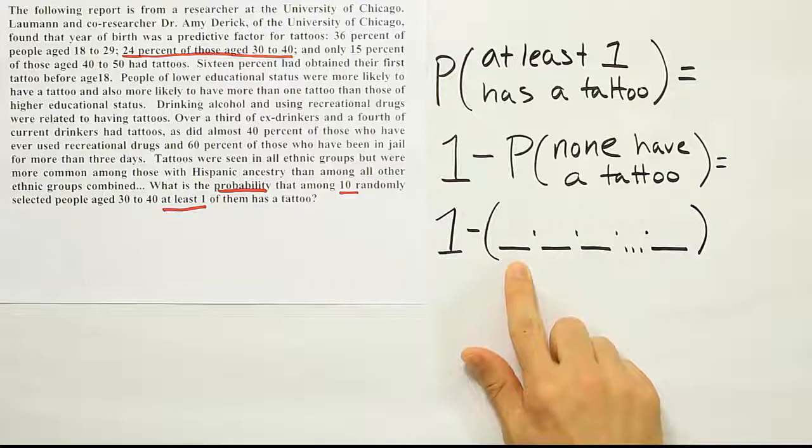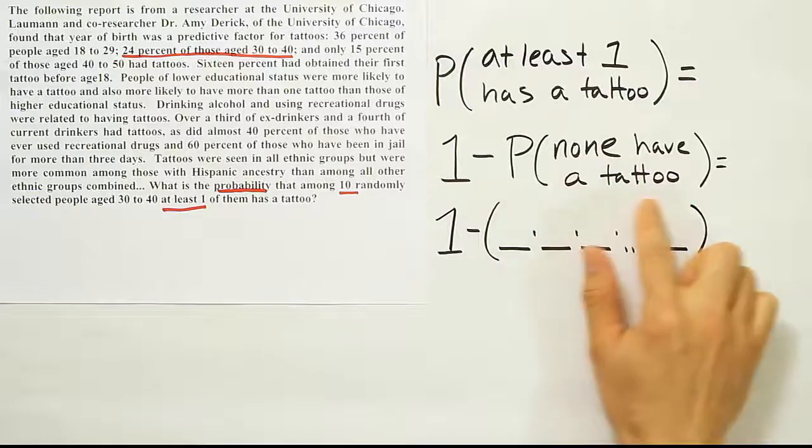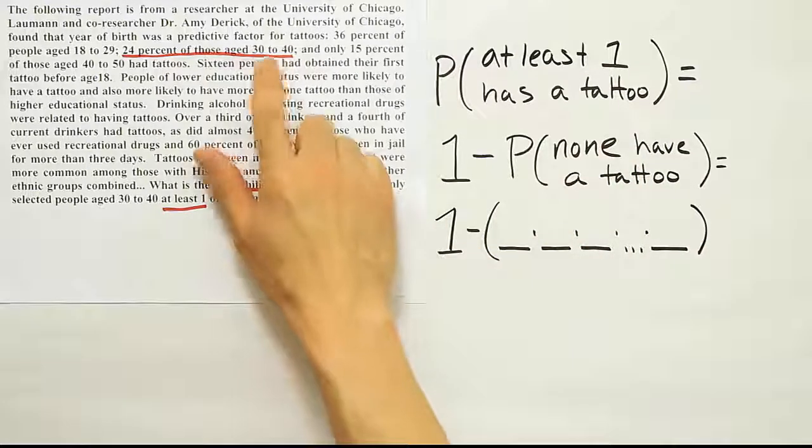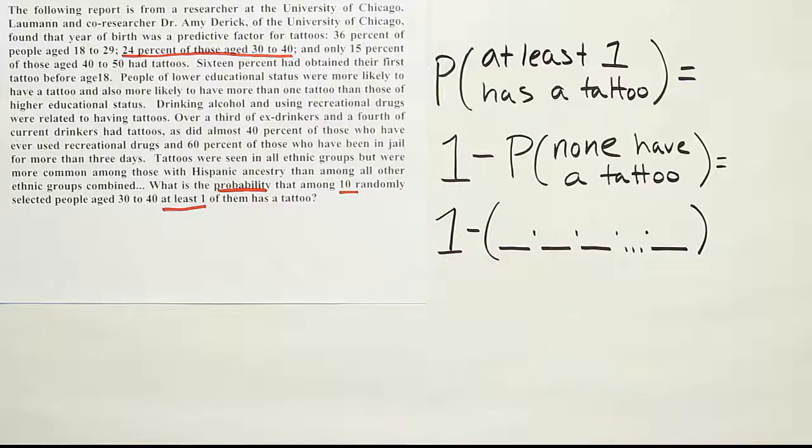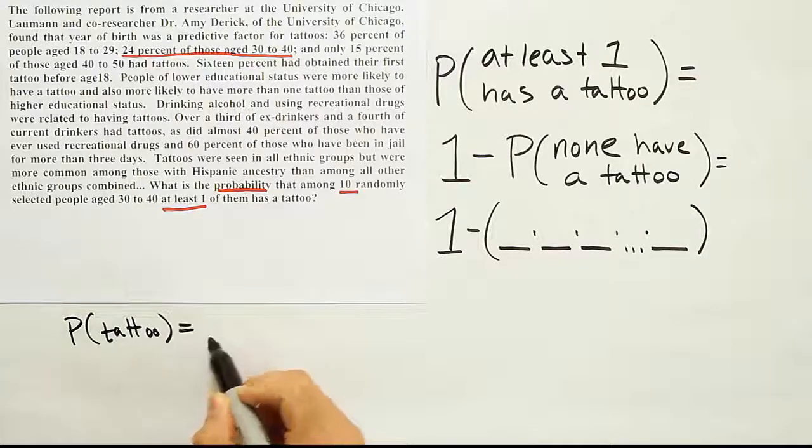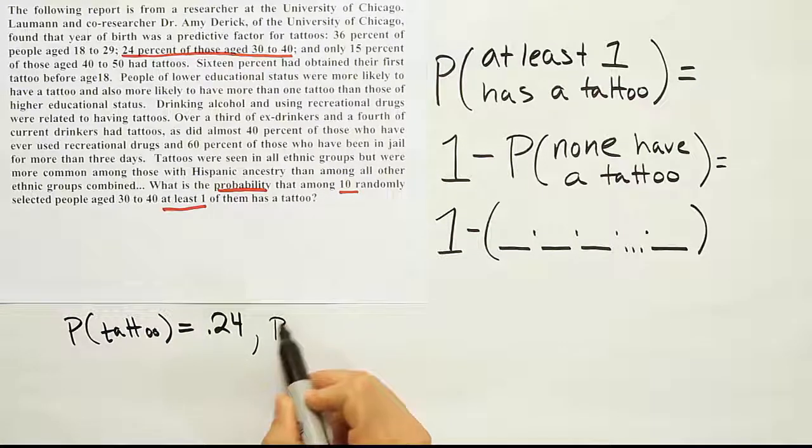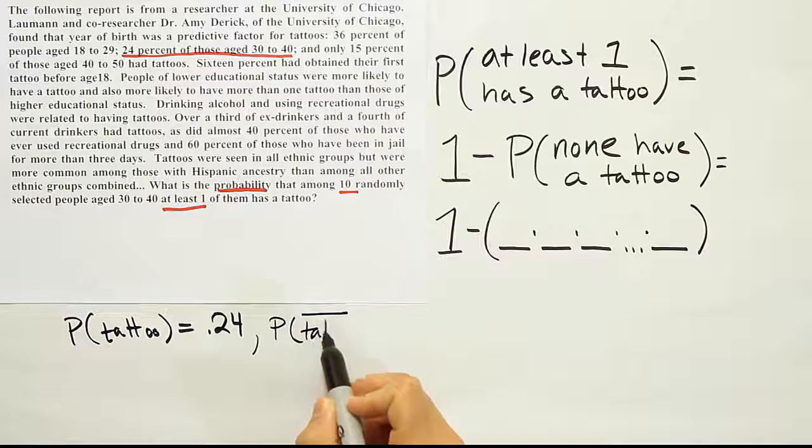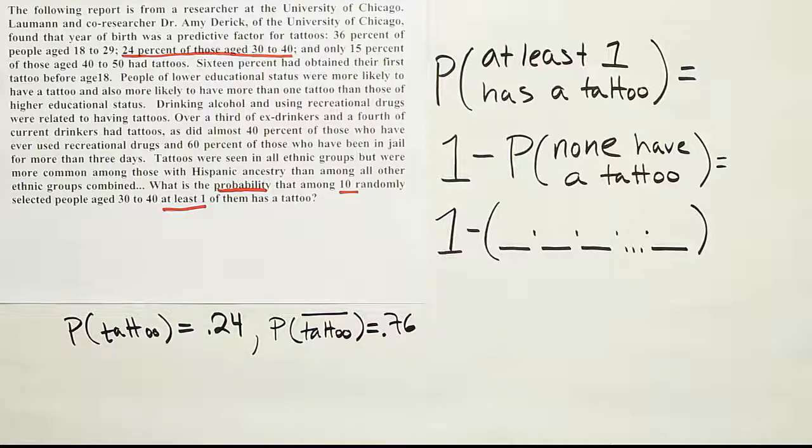All right, now this space here would represent the probability that the first person I select does not have a tattoo, because none of them are supposed to have a tattoo. So it's the first person I select in the 30 to 40 age bracket that doesn't have a tattoo. So we assume they don't have a tattoo. What's the probability that a person in that age bracket from 30 to 40 does not have a tattoo? Well, the probability that they have a tattoo, that is given to us as 0.24. That's what they tell us. Now we can figure out then the probability that the person does not have a tattoo would have to be all the leftovers, which is the remaining 76%. So if you do 1 minus 0.24, you will get 0.76.